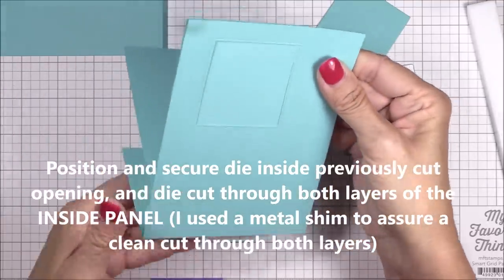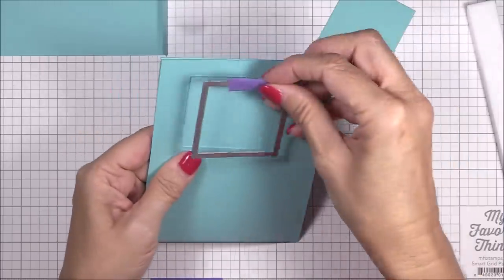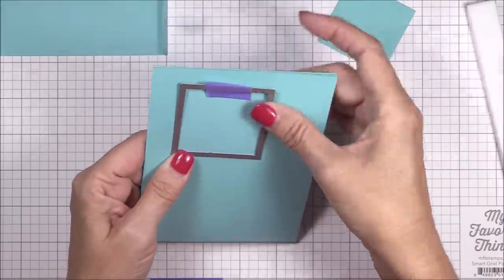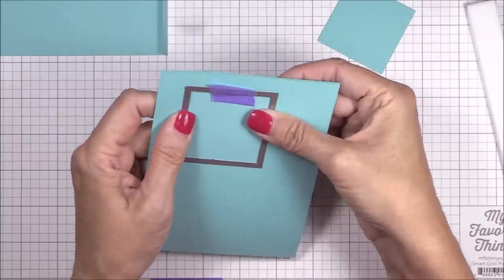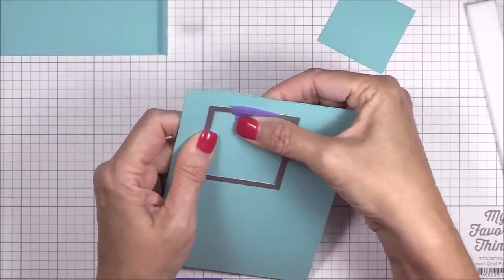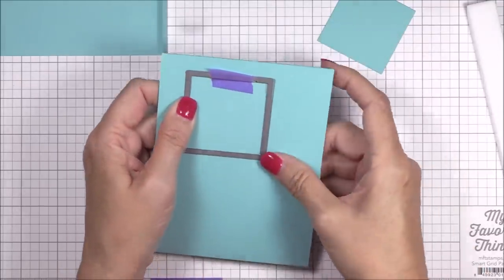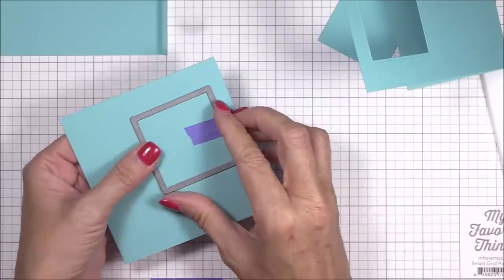Once all of the edges are aligned, place that square die back into place and run both panels through your die cutting machine. I used a metal shim to help ensure that the die cut through all layers, and I ran it through a couple of times just for good measure.